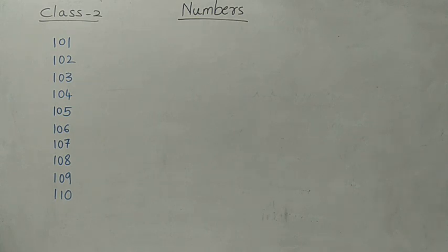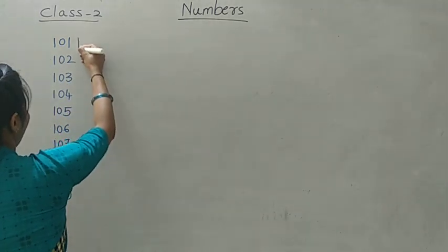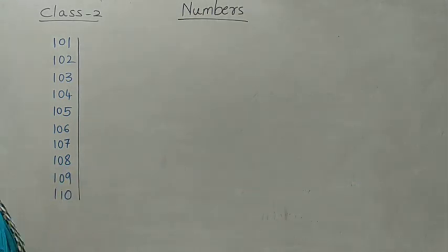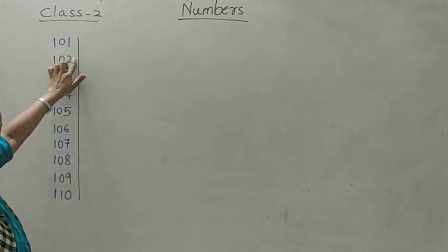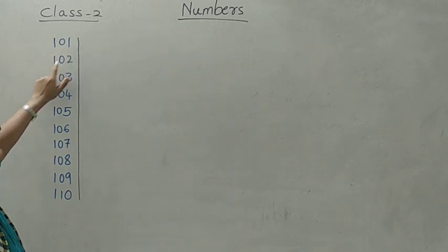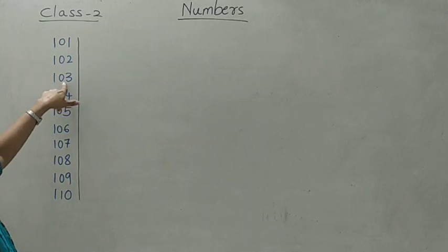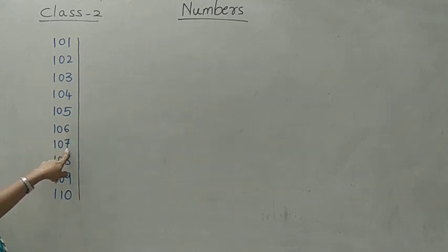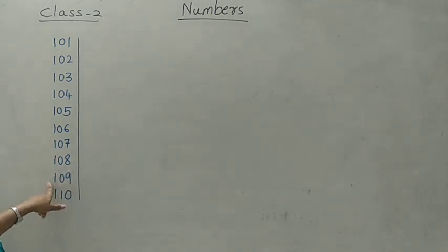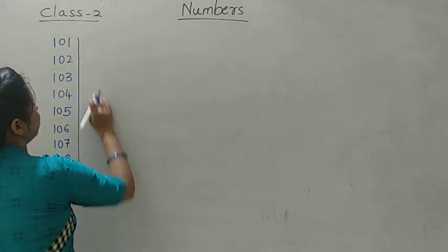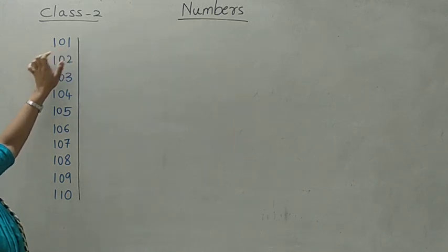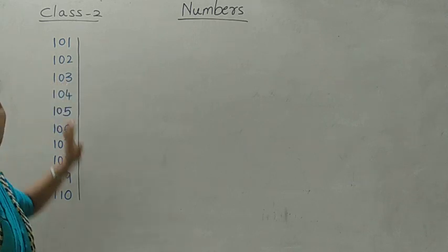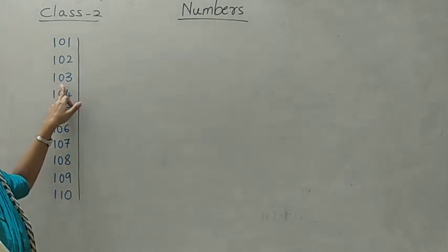Now take a scale and draw a proper straight line. See again, I am reading — you should repeat after me. Okay: one hundred and one, one hundred and two, one hundred and three, one hundred and four, one hundred and five, one hundred and six, one hundred and seven, one hundred and eight, one hundred and nine, 110. Okay.